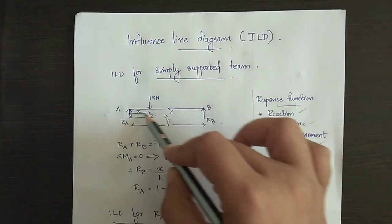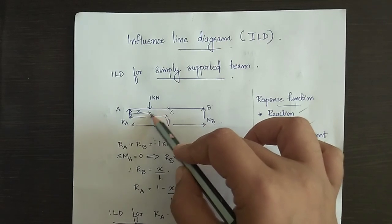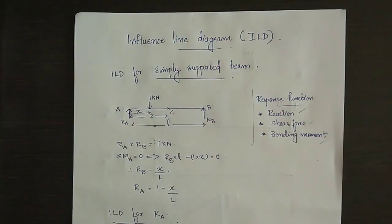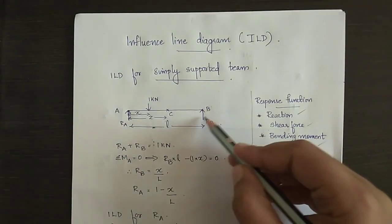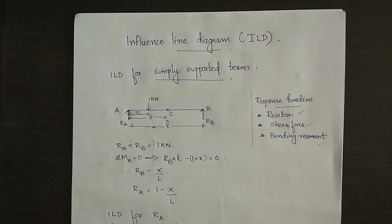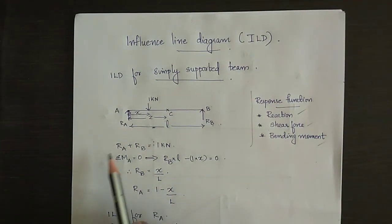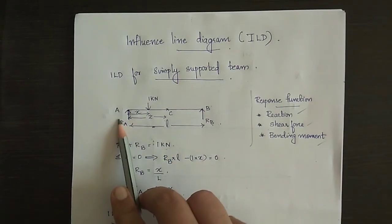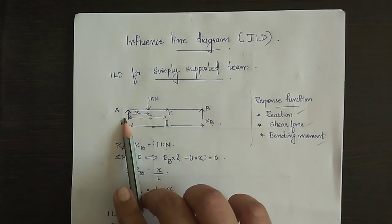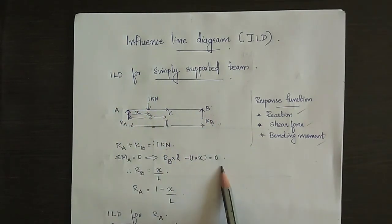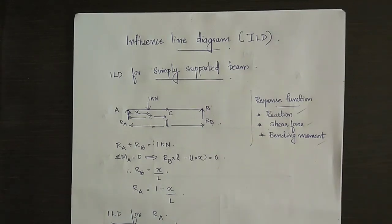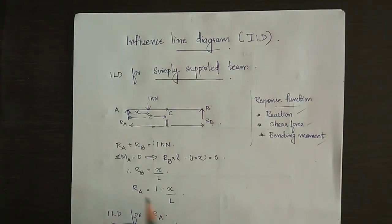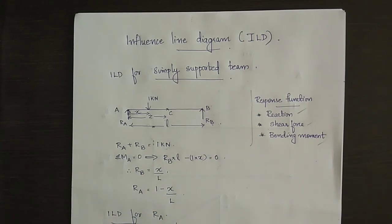Let the unit load be at a distance X from A. First, we find reactions RA and RB by equating upward forces to downward forces: RA plus RB equals 1 kN. Taking moments about A — where anti-clockwise moment is positive and clockwise is negative — we get RB equals X by L. Substituting back, RA equals 1 minus X by L.